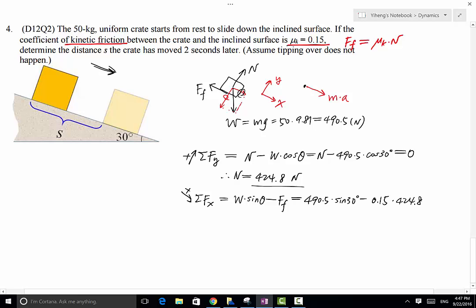This does not equal to zero, because there is motion along the x direction. According to our kinetic diagram, this equals to ma, which equals 50 times a. From here, we can solve for a. A equals 3.631 meter per second squared.